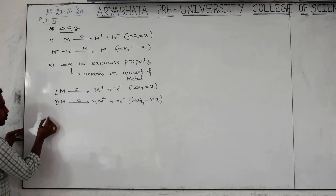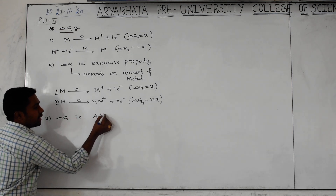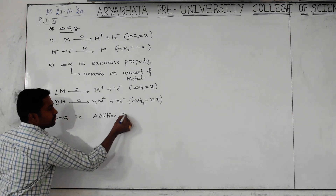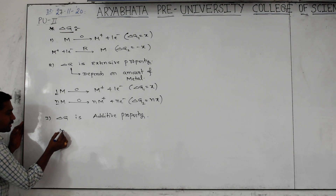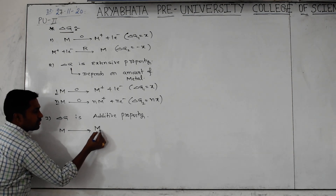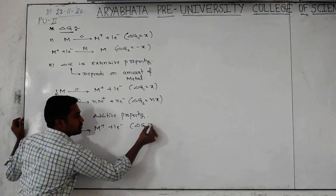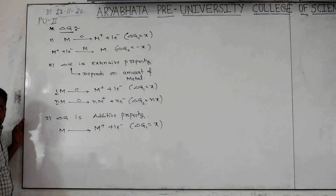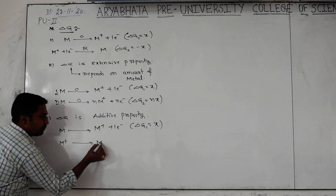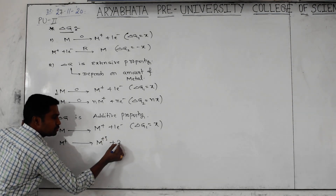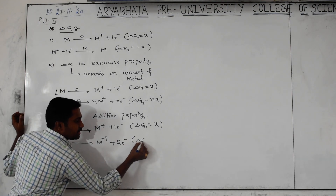I will give you one more concept: delta G is the additive property. What is this additive property? Just see. If suppose you take one metal atom undergoing oxidation, becoming M plus plus one electron. For this, delta G1 is equal to some X. One more oxidation process is there: M plus gives rise to M plus 3 plus two electrons. Is it also oxidation? Yes. Then we are getting delta G2.